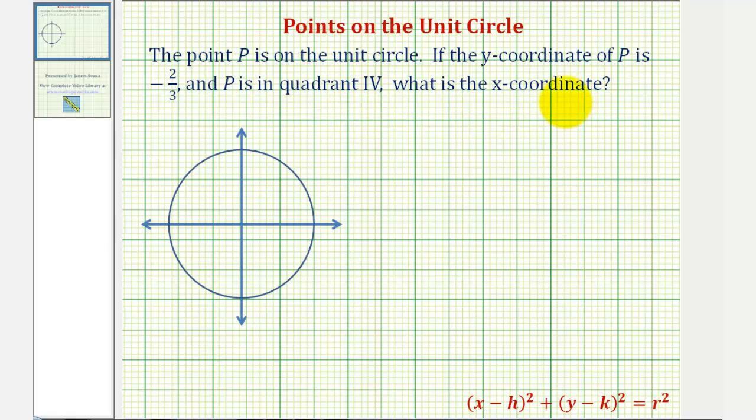There are a couple ways to approach this problem. If this is the unit circle, quadrant four would be down here, where the x-coordinates are positive and the y-coordinates are negative.